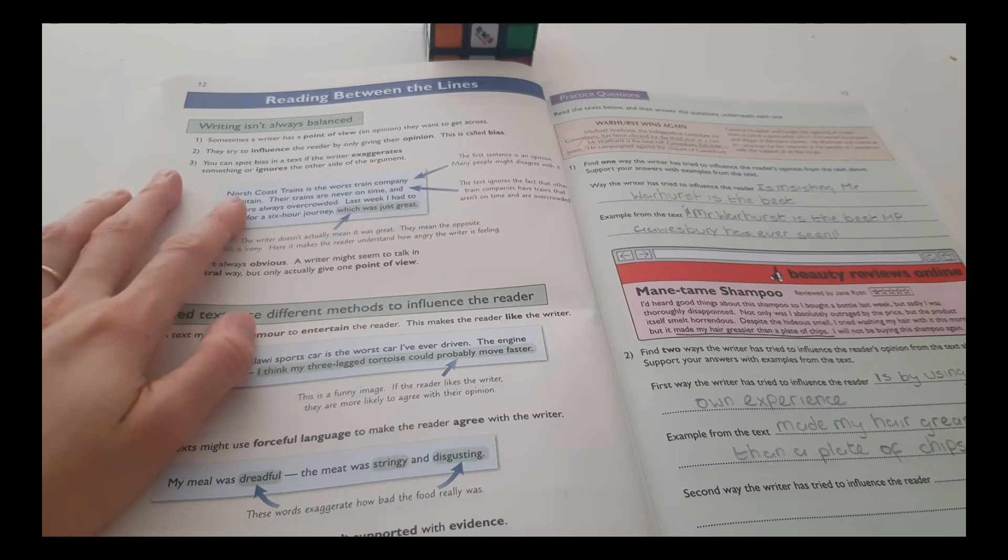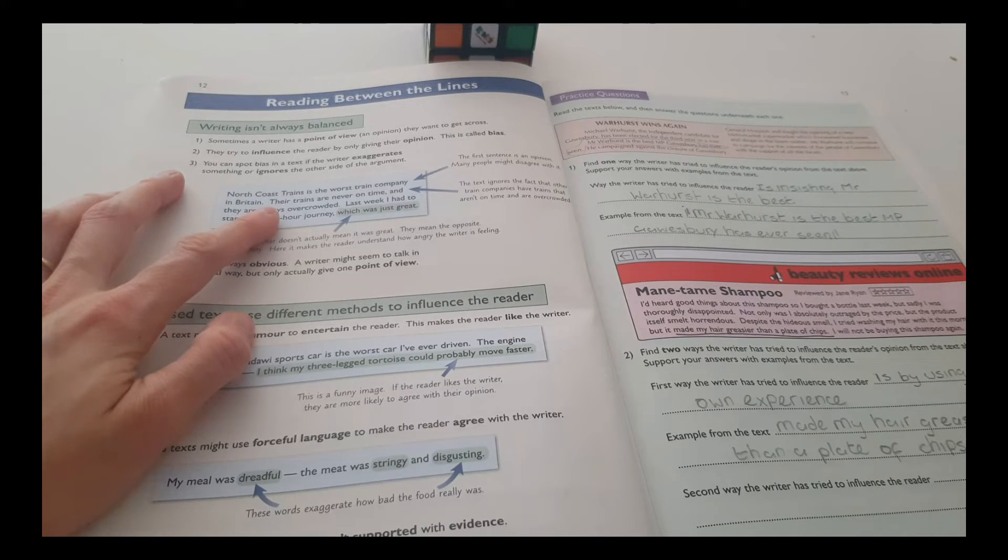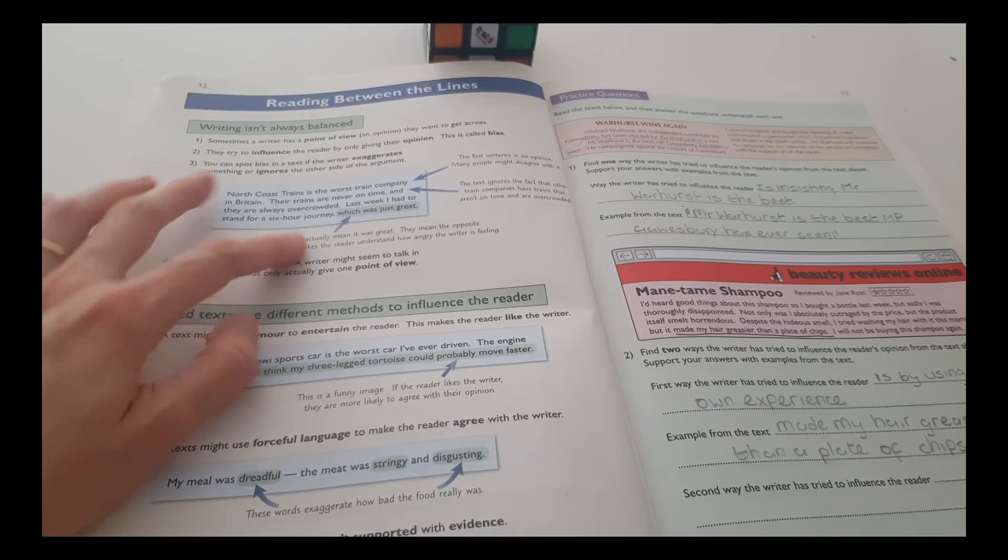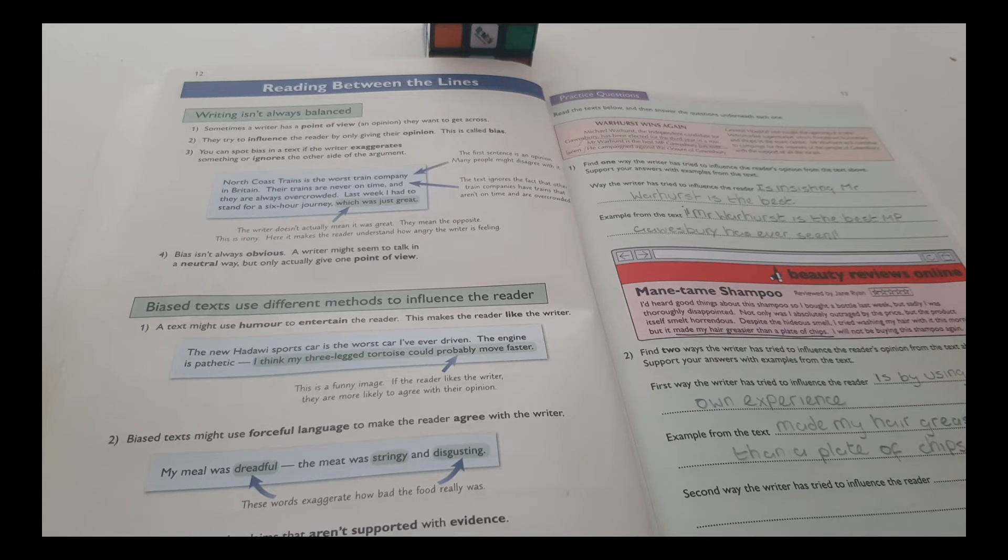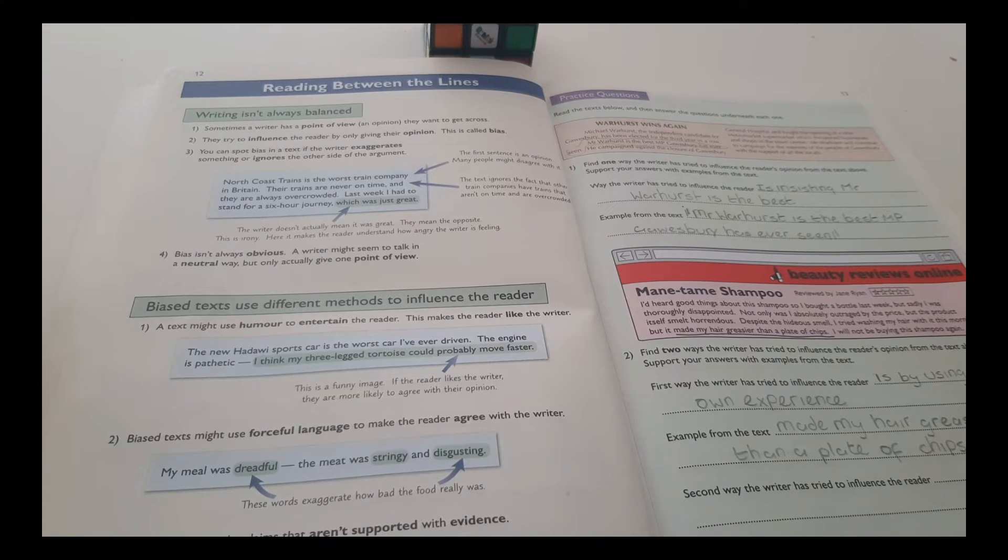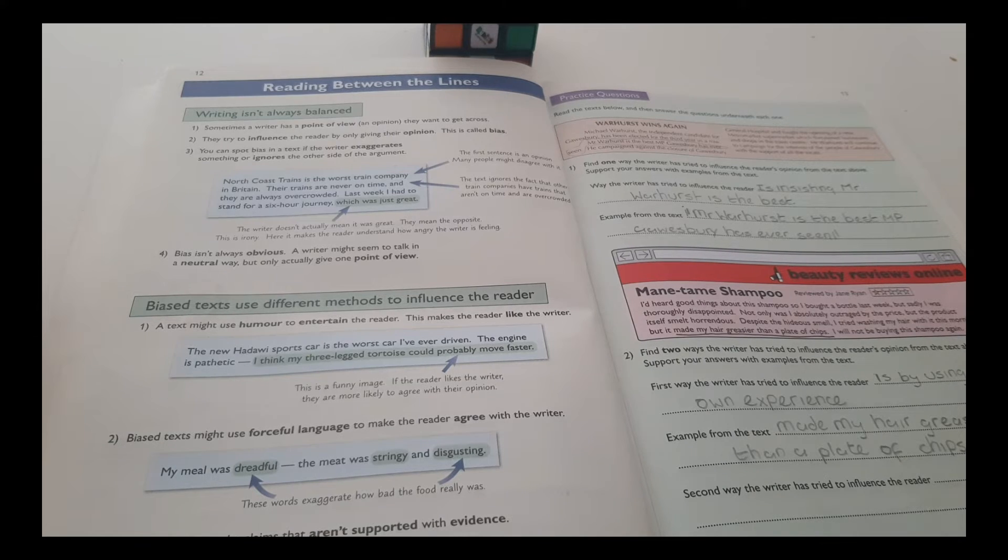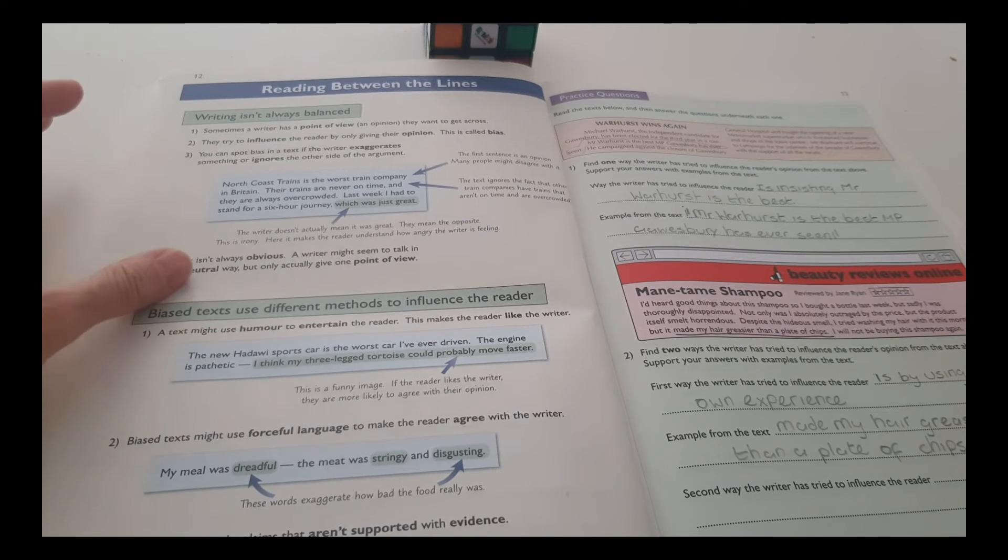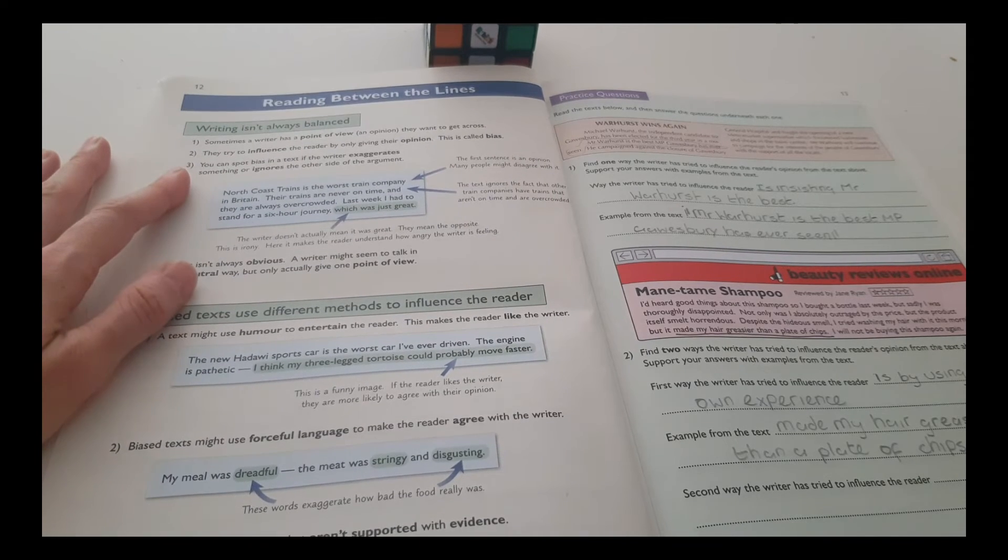Let's see this text. North Coast Trains is the worst train company in Britain. Their trains are never on time and they are always overcrowded. Last week, I had to stand for a six-hour journey, which was just great. The first sentence is an opinion. Many people might disagree with it.